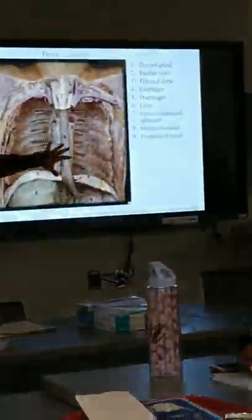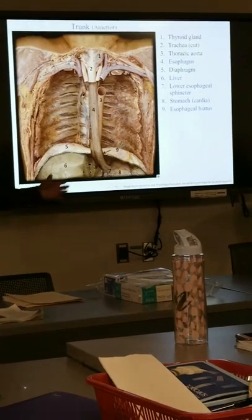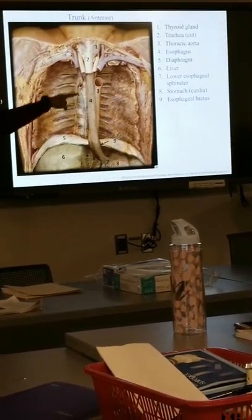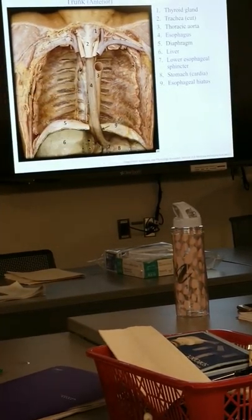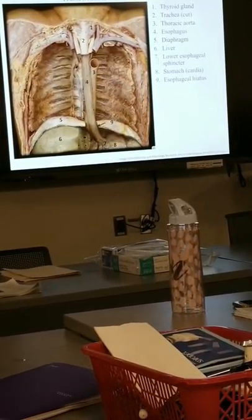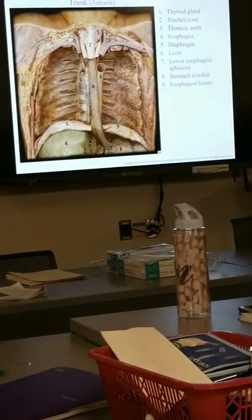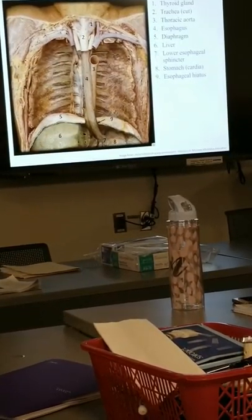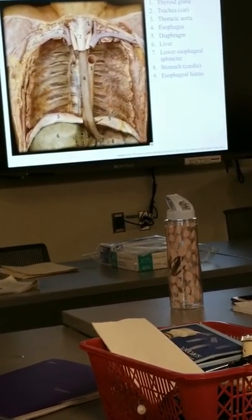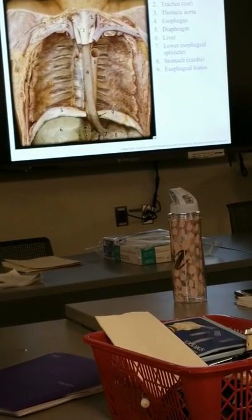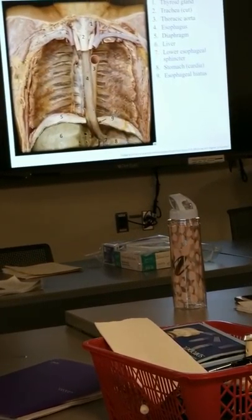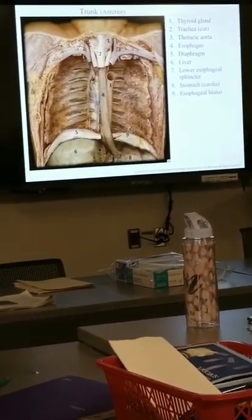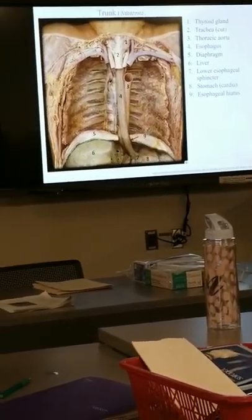The esophagus is just a muscular tube. From an anterior perspective into the thoracic cavity, you can see the esophagus — it's just a collapsible muscular tube. It has the ability to expand as it's filled with food, and then smooth muscular contractions along the length of the esophagus drive that food down to the stomach.